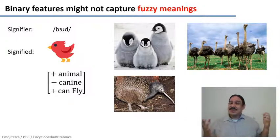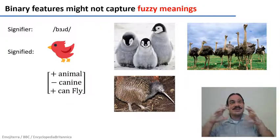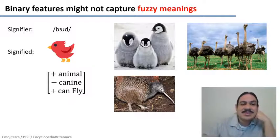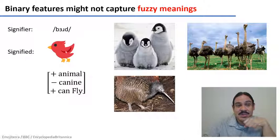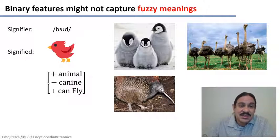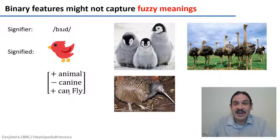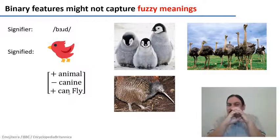So let's take an even closer look at meaning. Let's say we have a bird and this mental image of the bird could be described as an animal that is not canine and that can fly. So we have like a core idea of what a bird is.